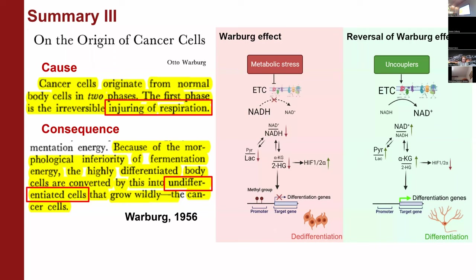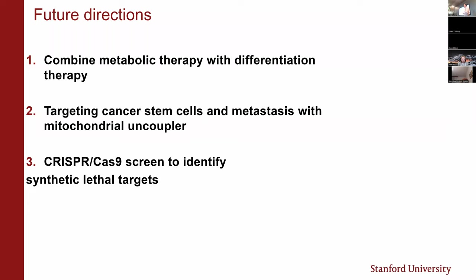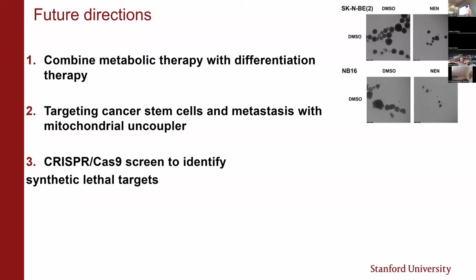To finalize and mention ongoing future research in our lab: first, because we discovered that the mitochondrial uncoupler can induce differentiation in neuroblastoma, the next logical follow-up will be to combine this metabolic cell therapy with retinoic acid-based differentiation therapy, to see if this combination can work better. Second, we also discovered that the uncoupler can significantly inhibit 3D growth and neural sphere formation of neuroblastoma cells, so we're trying to use the uncoupler to target cancer stem cells and metastasis. Lastly, we are also collaborating with Le Chong's lab using the CRISPR-Cas9 system to screen for synthetic lethal targets that can eventually be combined with metabolic therapy.